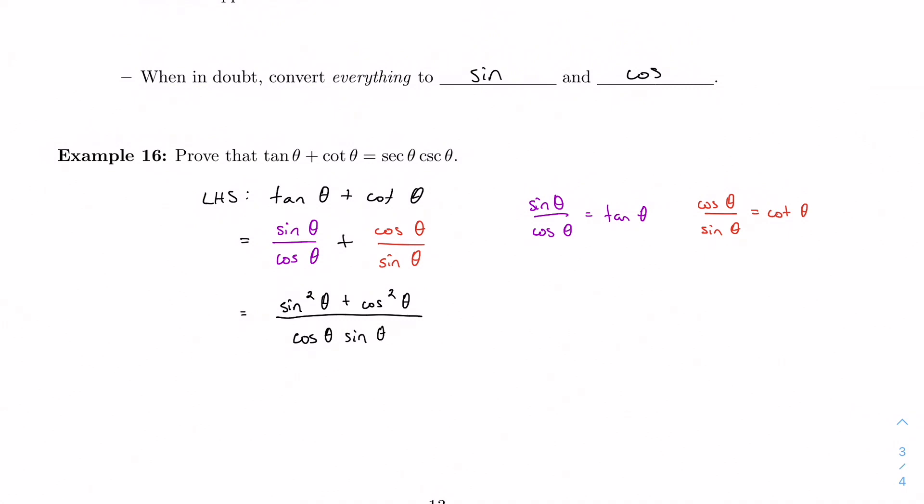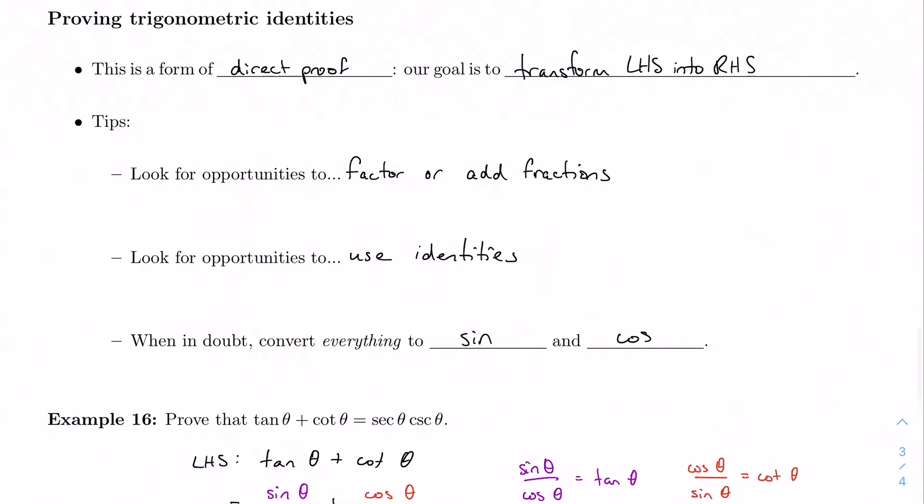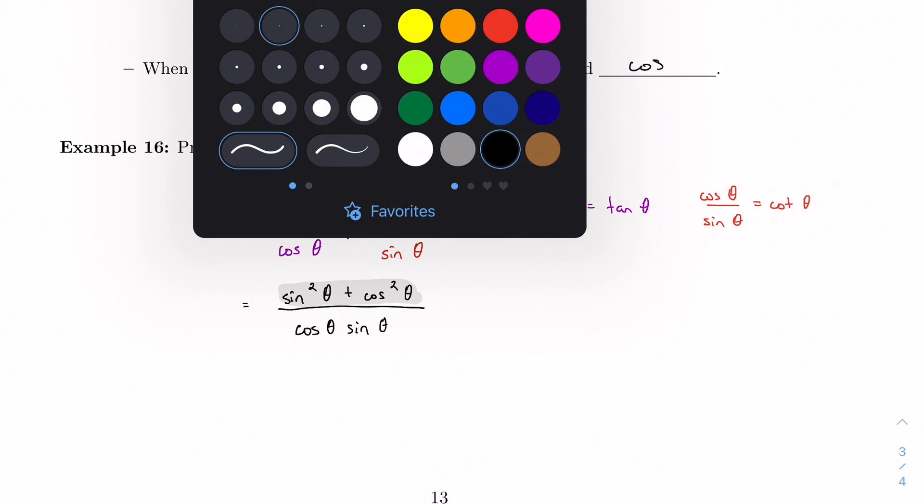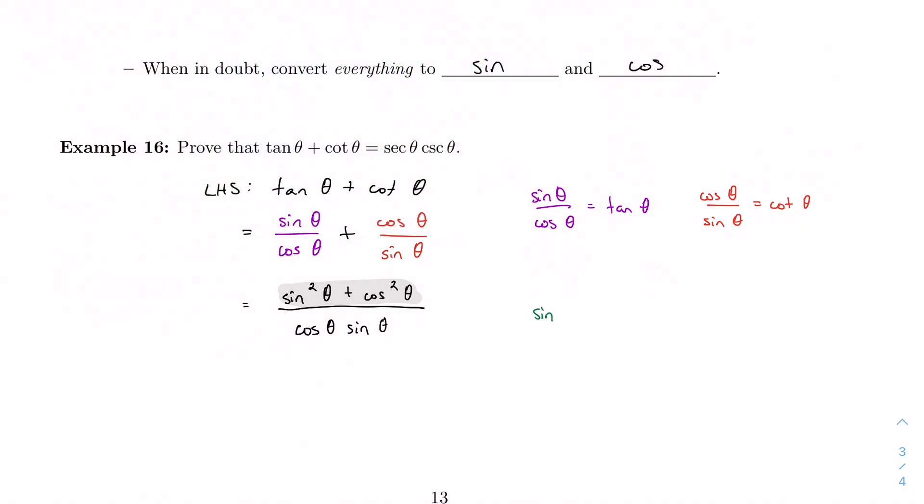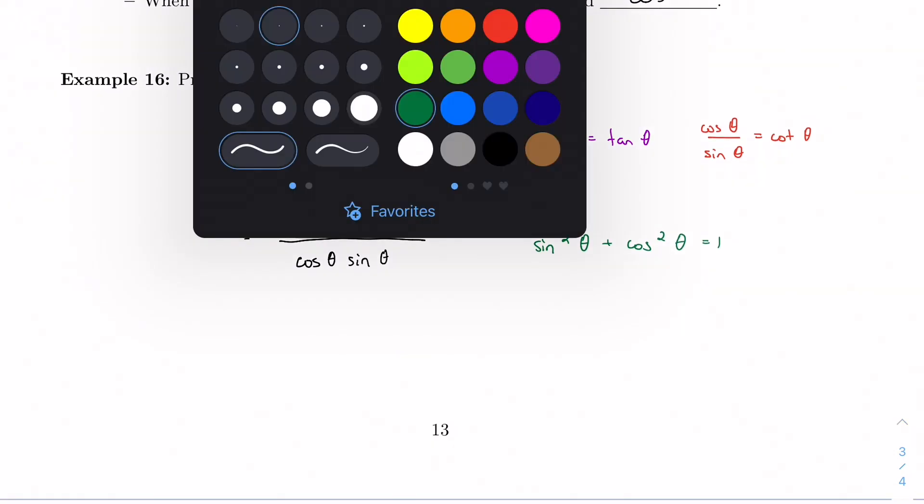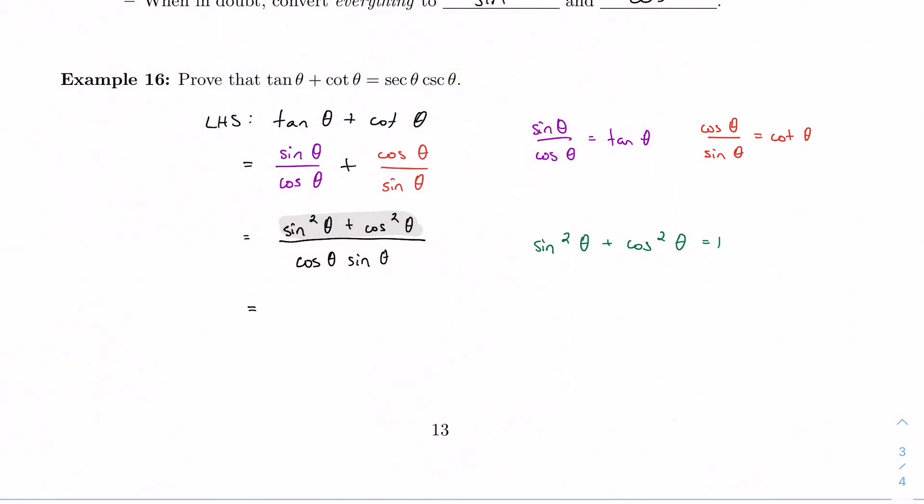And now we're here. And again, we look back at our three tips. And we don't really have anything to factor. And we don't really have any fractions to add anymore. But we do have an identity that we can use. We know that this sine squared plus cosine squared, I said that's fundamental. That's super important. It's a Pythagorean identity. We know that sine squared plus cosine squared is equal to one. So we can just replace this with one.